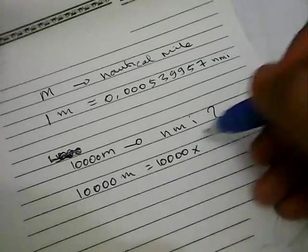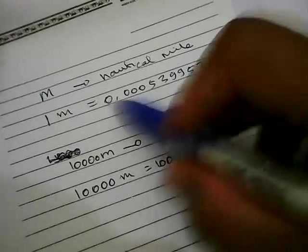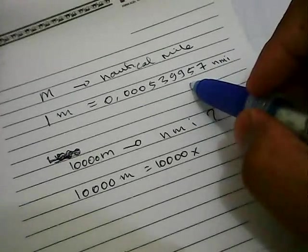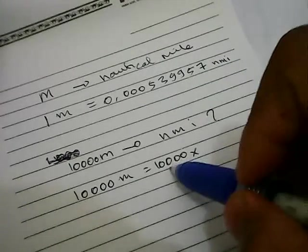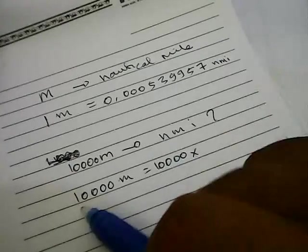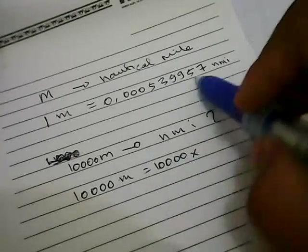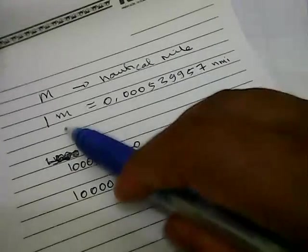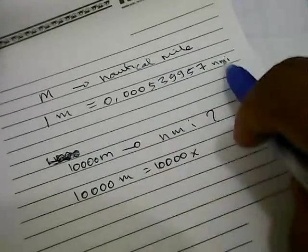You need to multiply it with this number. We're supposed to multiply 10,000 with this number. That's all because we want to convert meter in the nautical mile.